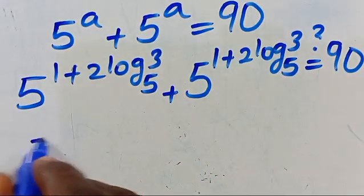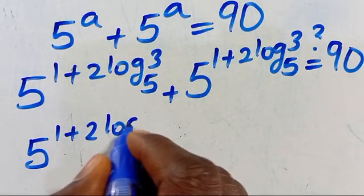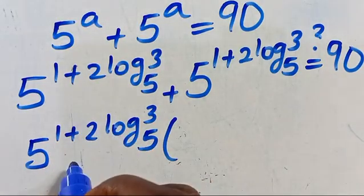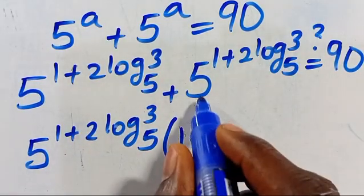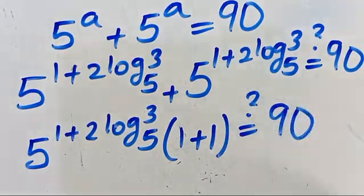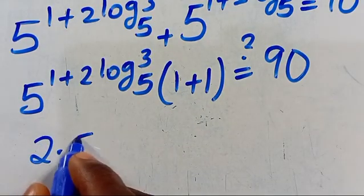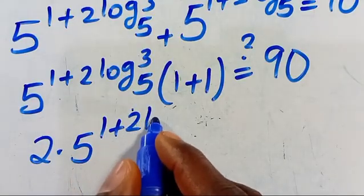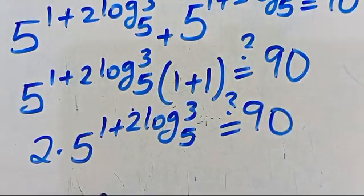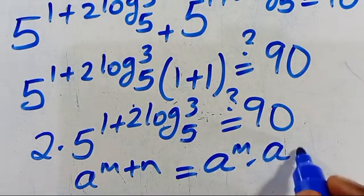Since both terms are the same, we can factor one out: 5 to the power of (1 plus 2·log₅3) multiplied by (1 plus 1). Each term divided by itself gives 1, so we get 2 multiplied by 5 to the power of (1 plus 2·log₅3). Recalling that a to the power of m plus n equals a to the power of m multiplied by a to the power of n.